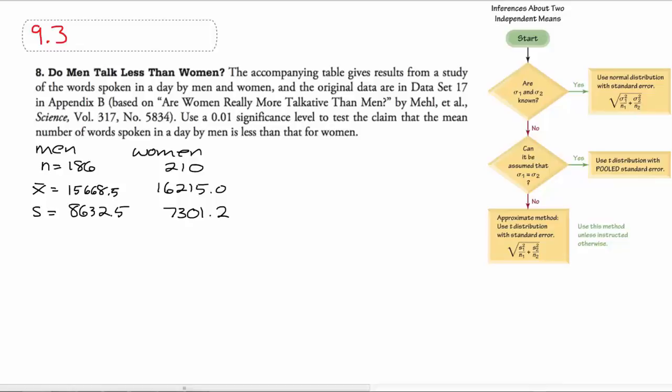For the men they had an average of almost 16,000 words a day, and then women had a little bit over 16,000 words per day on average spoken. First of all, how did they calculate that? Who walks around with a counter every day and counts every word? But anyways.